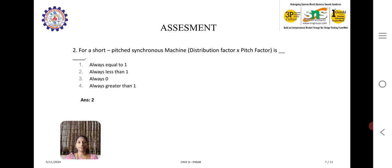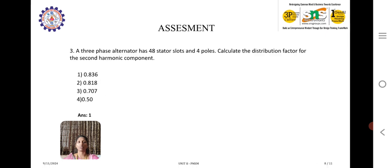For a short pitched synchronous machine, distribution factor multiplied by pitch factor will always be less than 1, since the Kd1, Kp1 and Ks1 are less than 1 only. The multiplied value will also be less than 1.